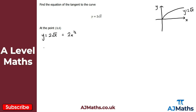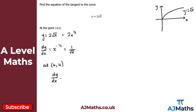Now we differentiate. So dy by dx: 2 times a half gives me 1, then we reduce the power by 1, so we get x to the power of minus a half. This is the same as 1 over the square root of x. So we've got the derivative. What I want now is the gradient at the point 4, 4. All we need to do is substitute the x-coordinate in: dy by dx equals 1 over the square root of 4, and the square root of 4 is 2. So we get a half. So the gradient at the point 4, 4 is equal to a half.